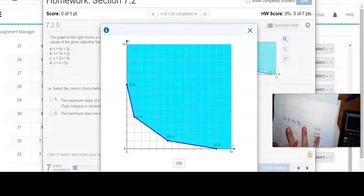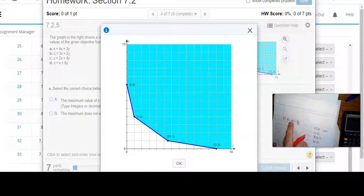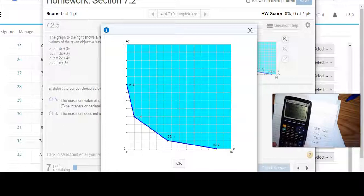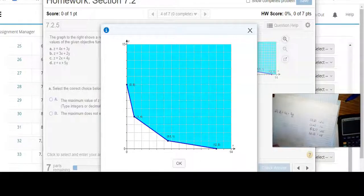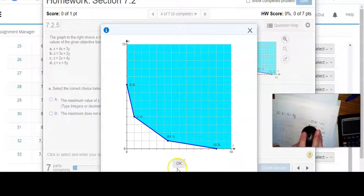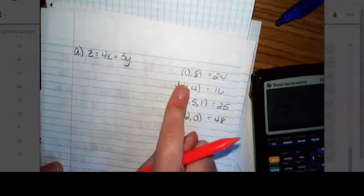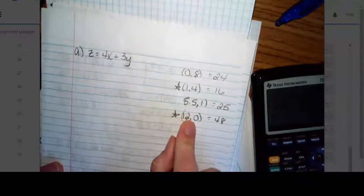So, subbing these values in, 4 times 0 plus 3 times 8 is 24. 4 times 1 is 4, plus 3 times 4 is 12, so 16. 4 times 5.5 is 22 plus 3 is 25. And 4 times 12 is 48, plus 0 is 48. So, what's your minimum value? My minimum value is 16, and it occurs at the point 1,4. My maximum value is 48, and it occurs at the point 12,0.